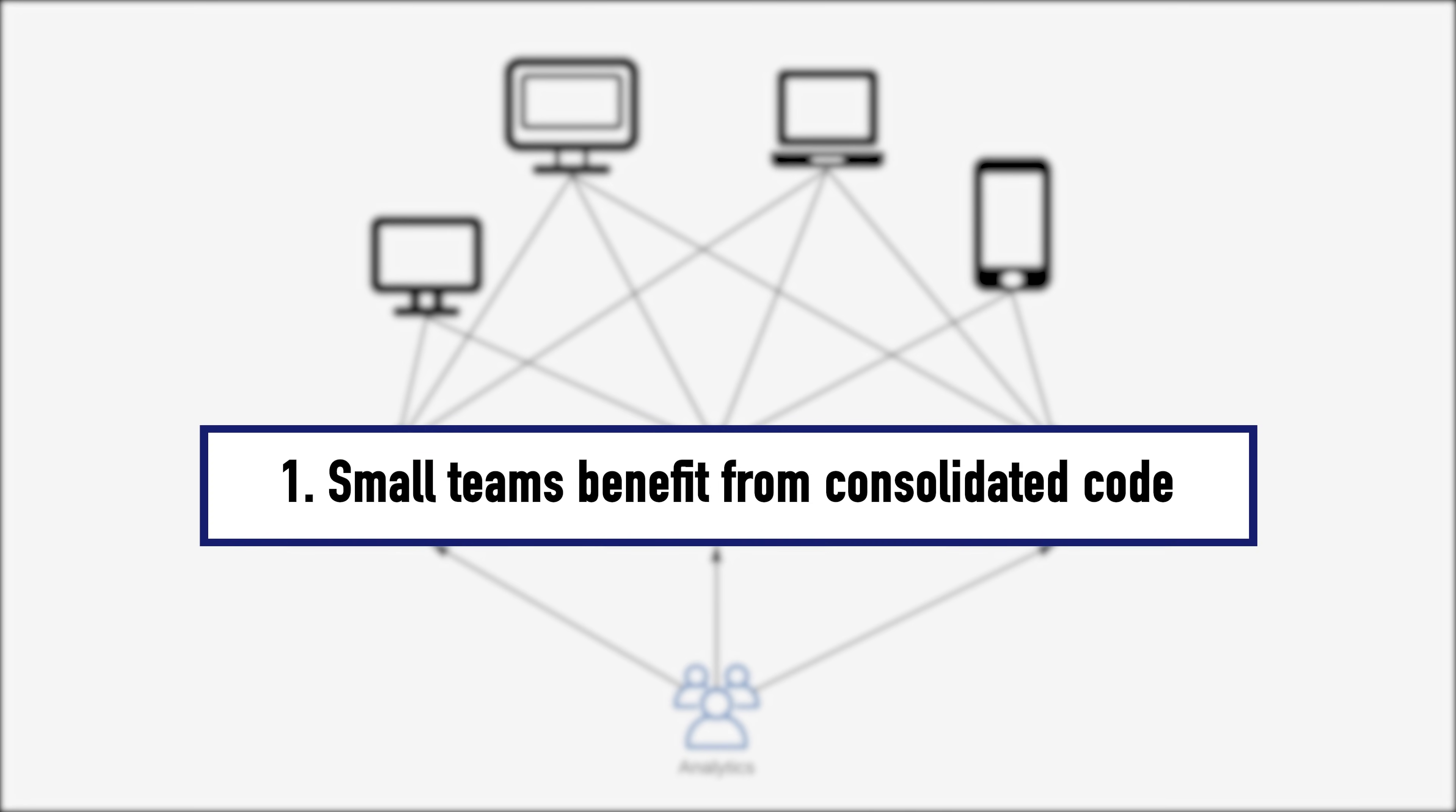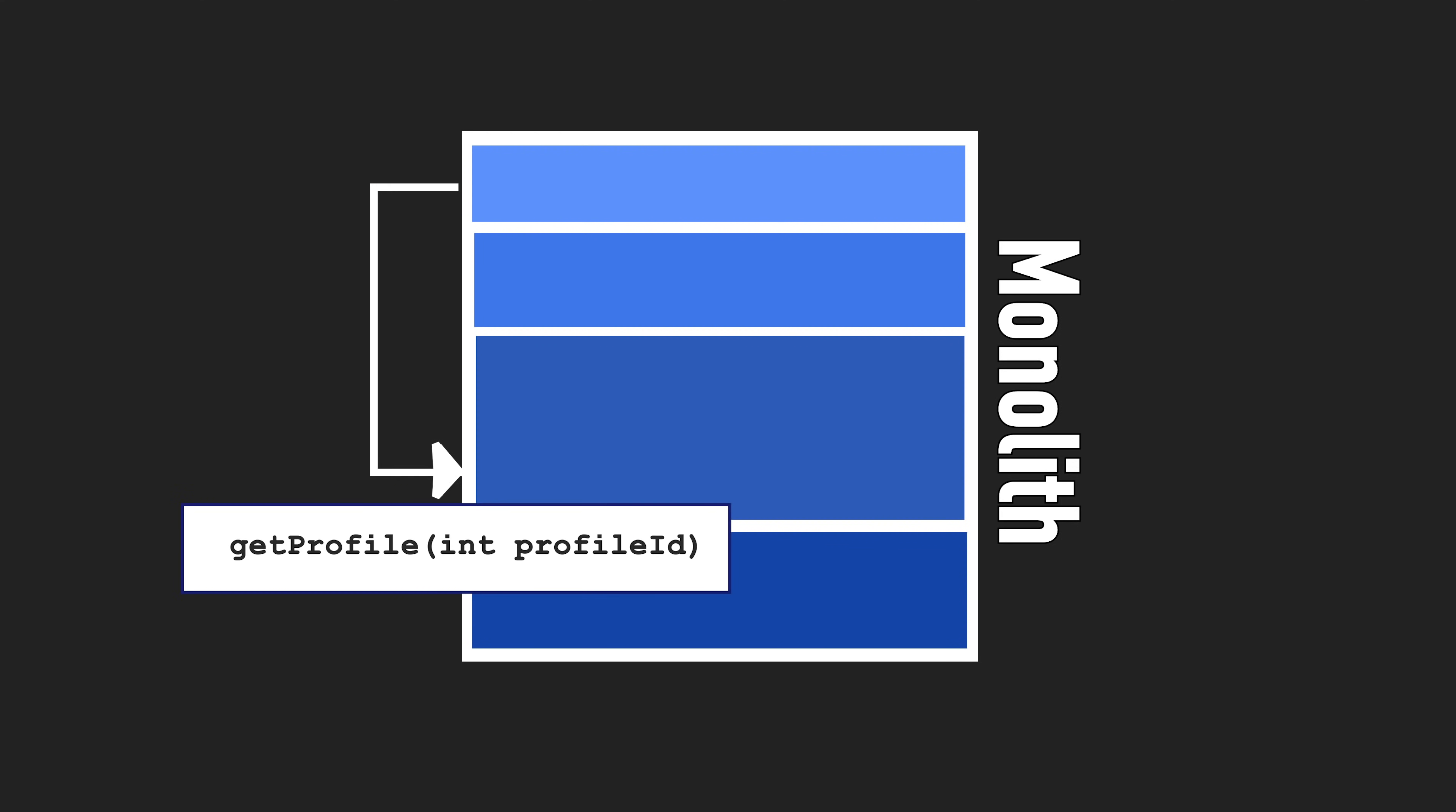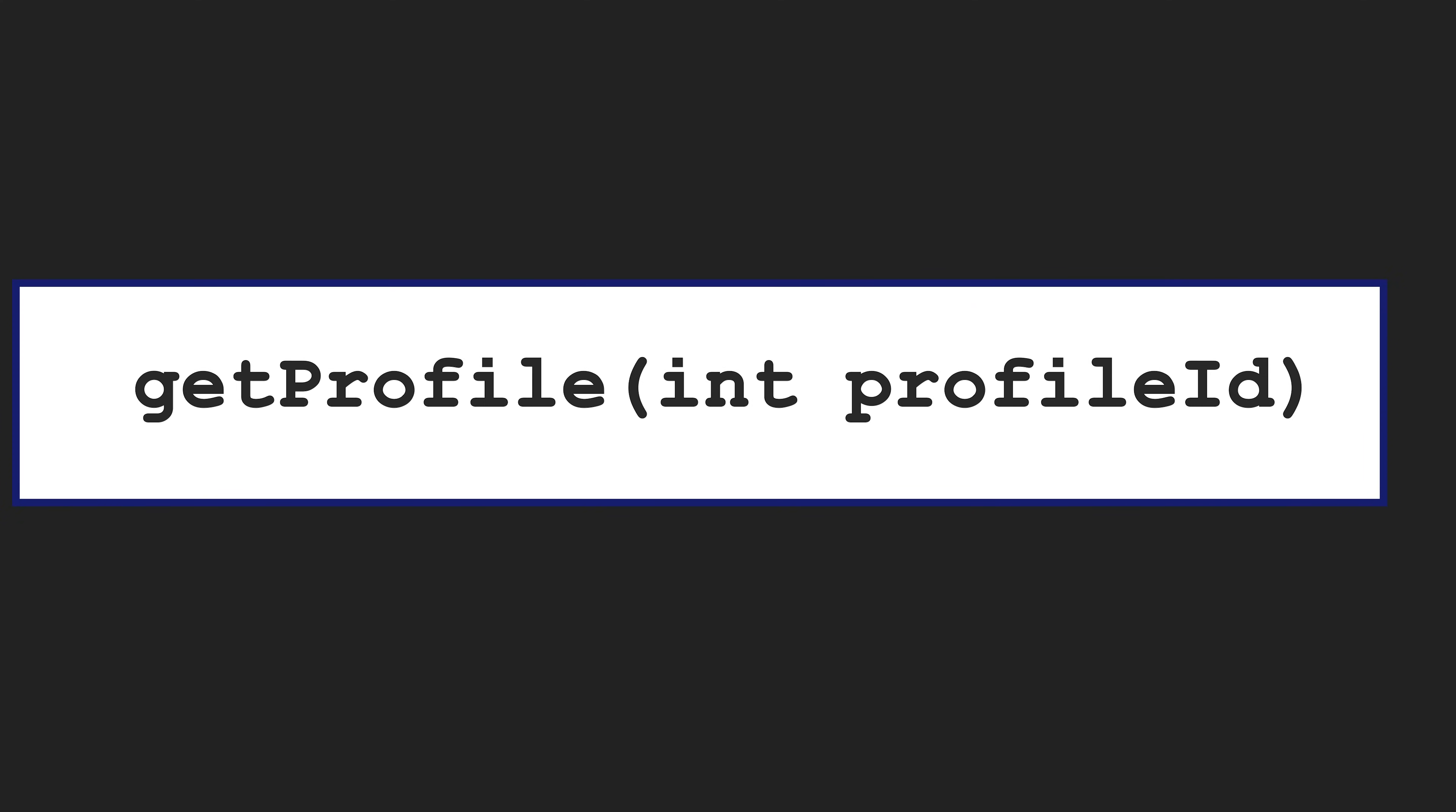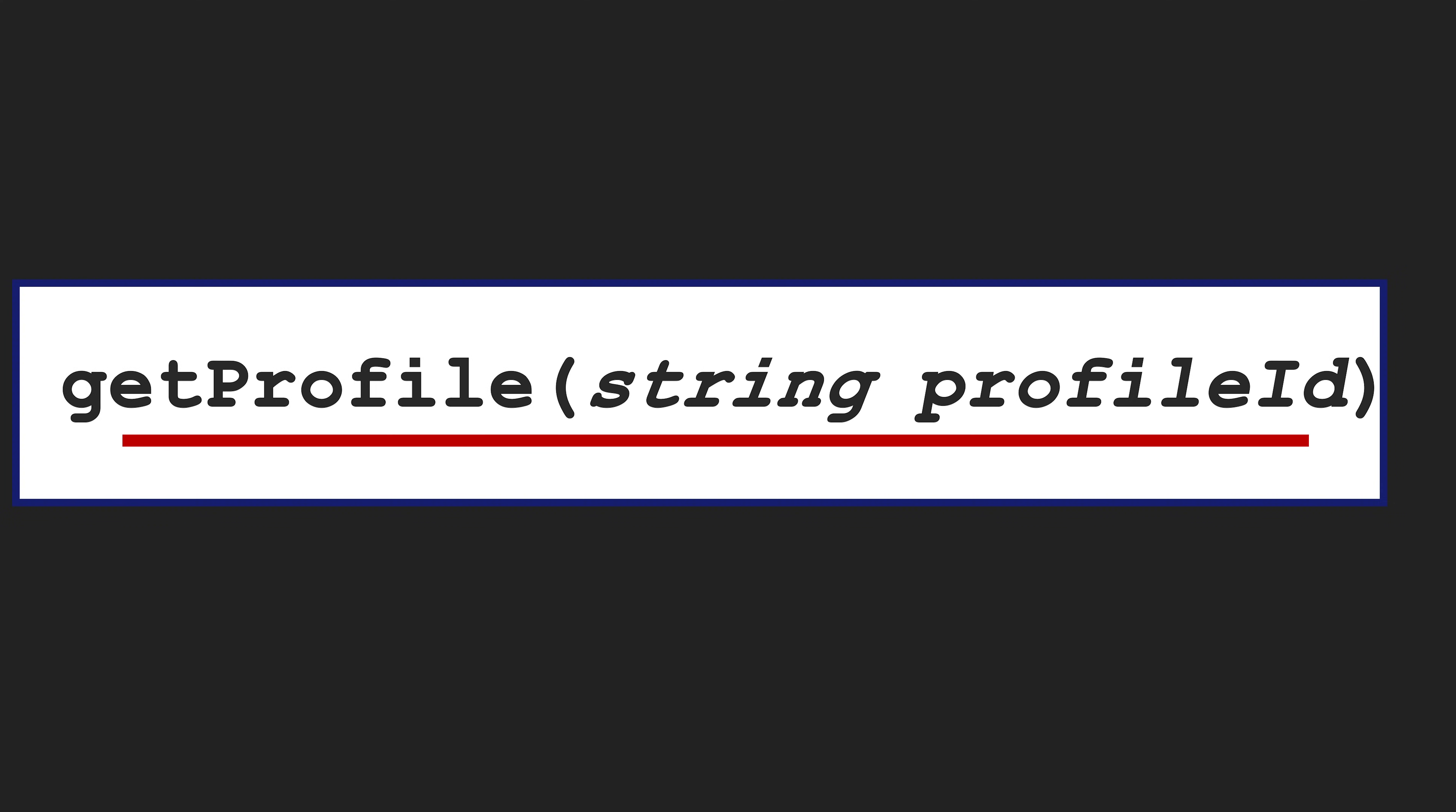So for a small team, monoliths are good. For a large team, microservices are probably the way to go. The second one is that because there is more clear communication happening in a monolith module A to module B, you're doing a single function call. The parameters that you're passing into that function are explicit. They're clear. So when you're making that function call, if you make a wrong function call, the compiler is going to say no.